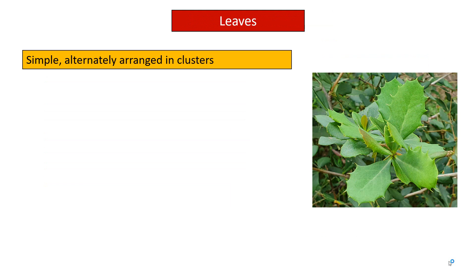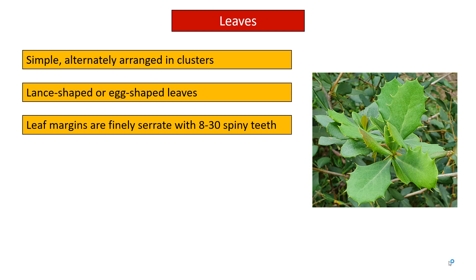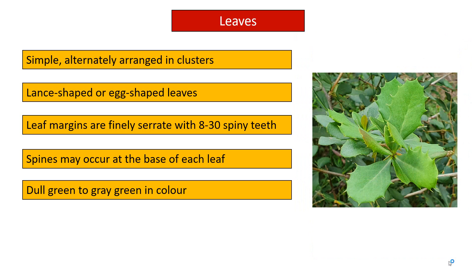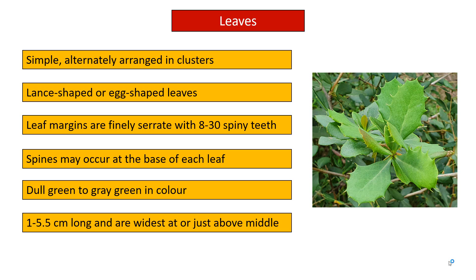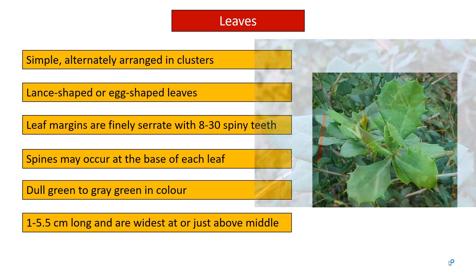Leaves are simple and alternately arranged in clusters. They have lens-shaped or egg-shaped leaves. Leaf margins are finely serrated with 8 to 30 spiny teeth. Spines may occur at the base of each leaf. They are dull green to grey-green in color. They are 1 to 5.5 cm long and are widest at or just above the middle.